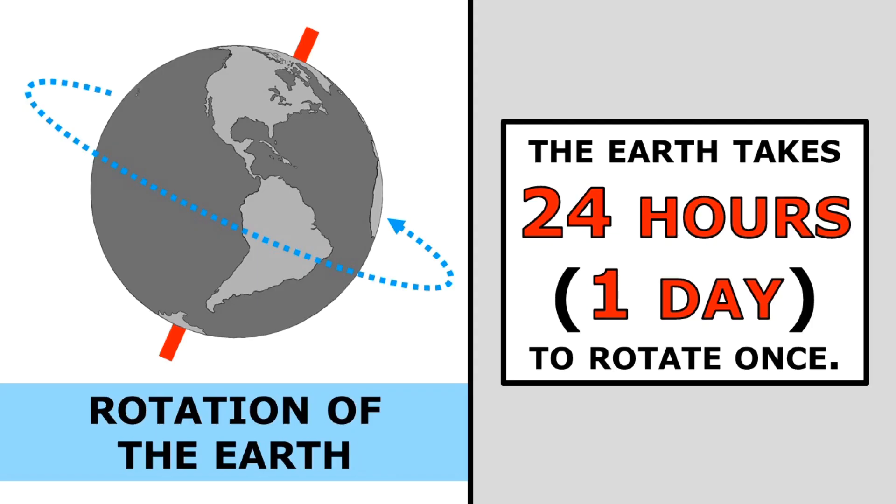The Earth takes 24 hours, or one day, to rotate once. So that means the Earth completes one whole rotation every 24-hour day.